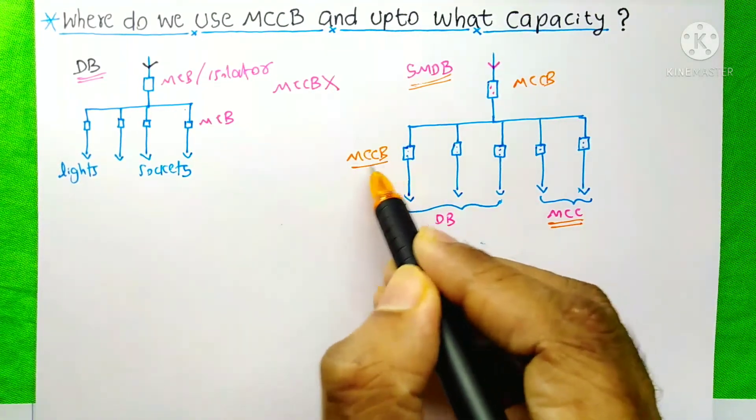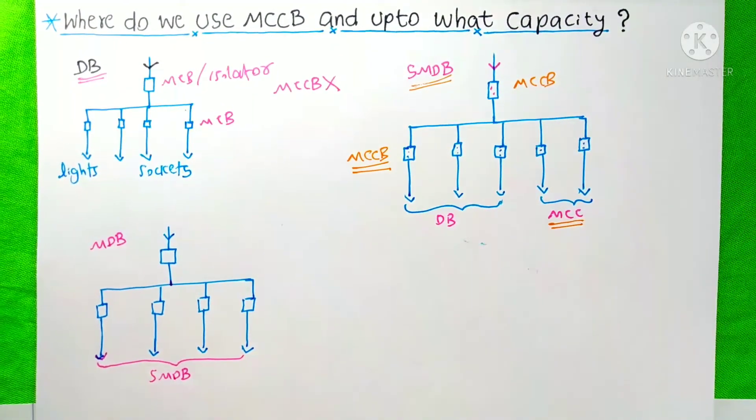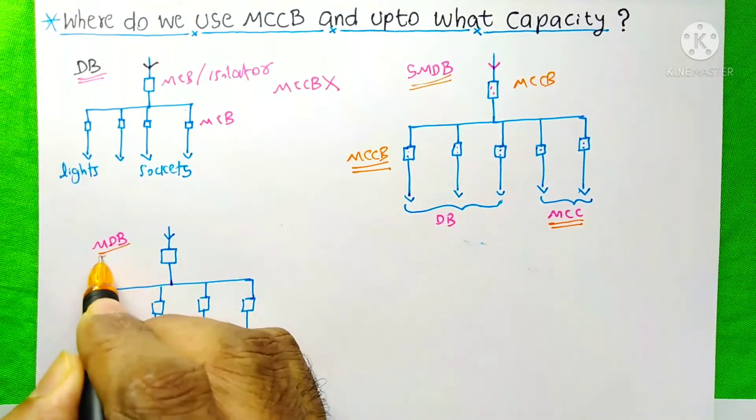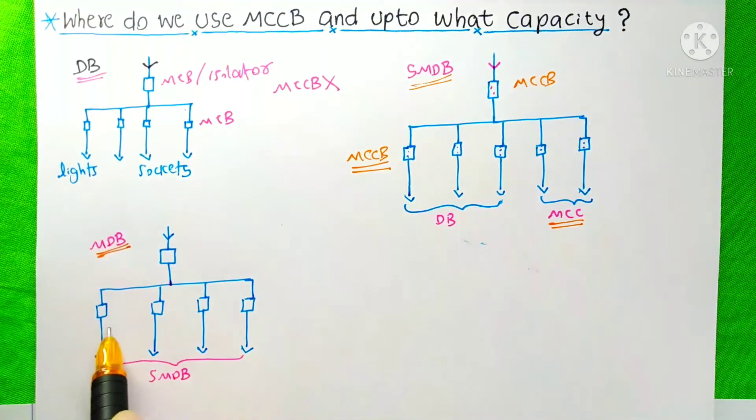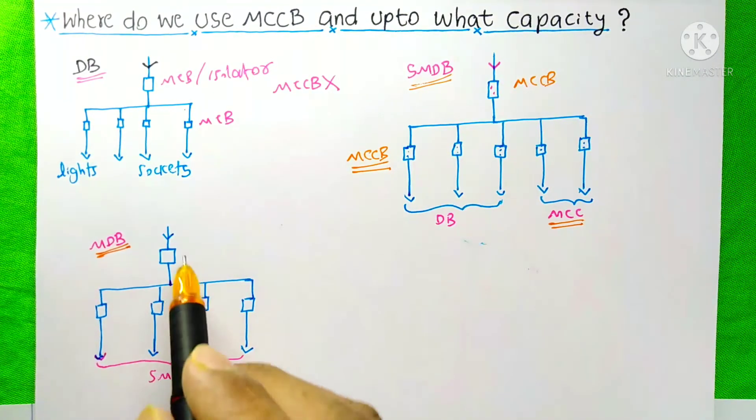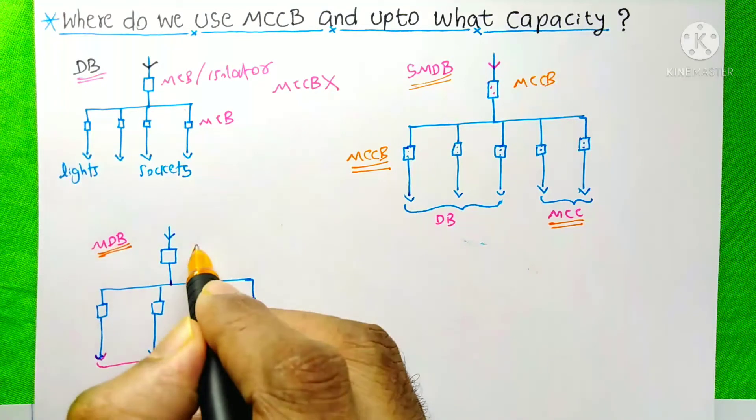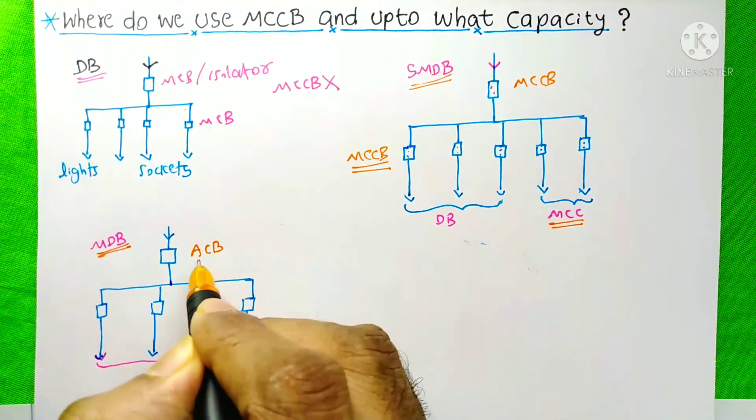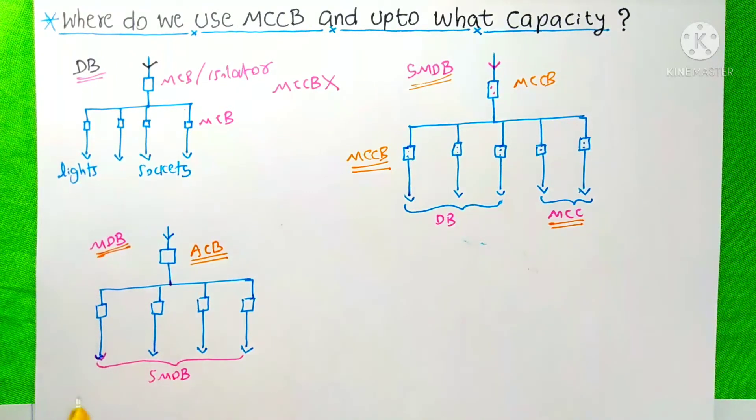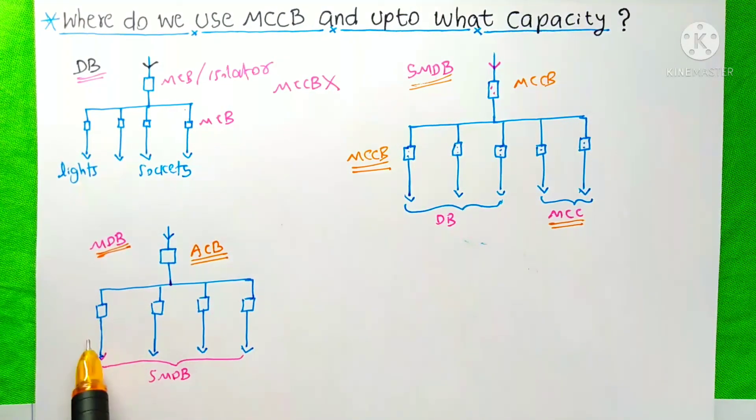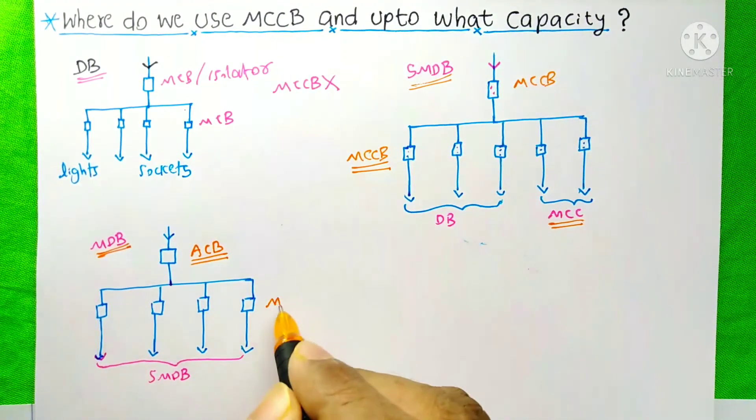The next case is about the MDB, main distribution board. It is the main breaker and these are the branch breakers for this MDB. Generally we use ACB, air circuit breaker for the Incomer of this MDB. And for the branch breakers, we generally use MCCB.